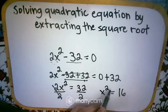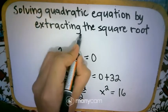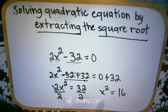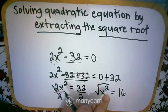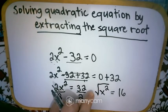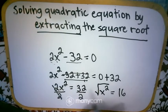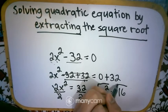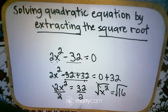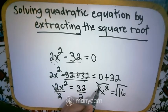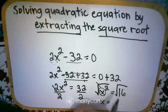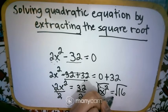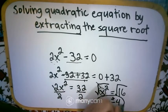Next, we remove the exponent. This is where extracting the square root comes in. To remove the exponent 2, we put a square root radical sign on the left side. Applying 'do it to the left, do it to the right', we put the square root on the right side as well. The square root and the squared cancel each other out, leaving x. The square root of 16 is positive/negative 4 — that is our answer.